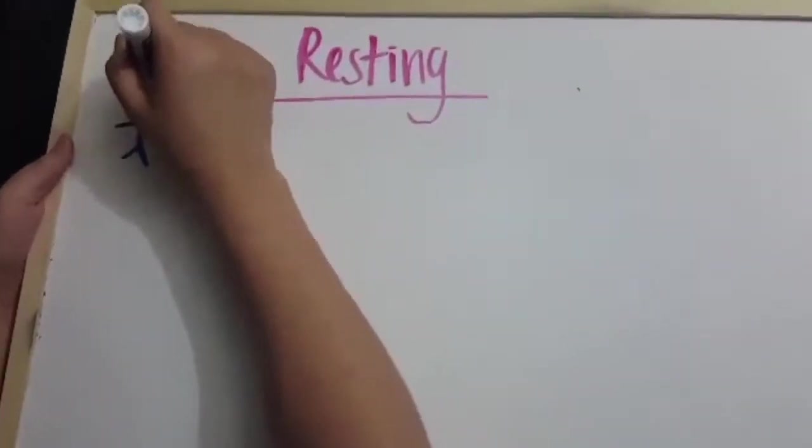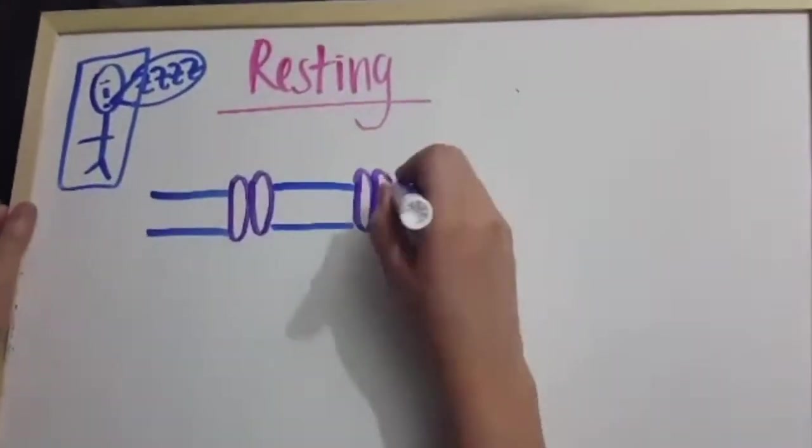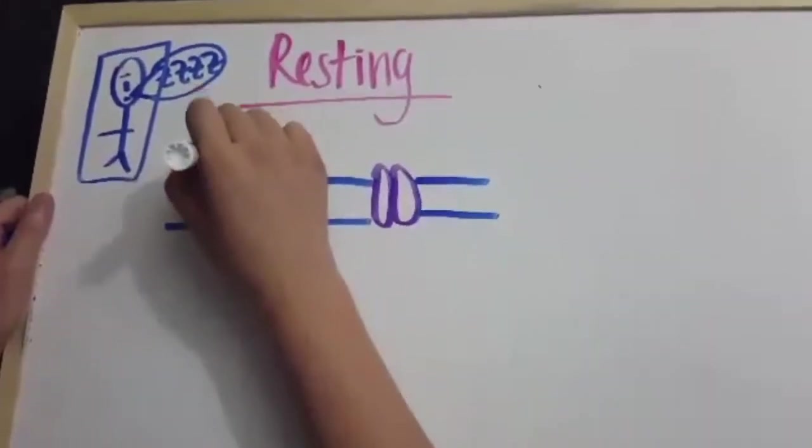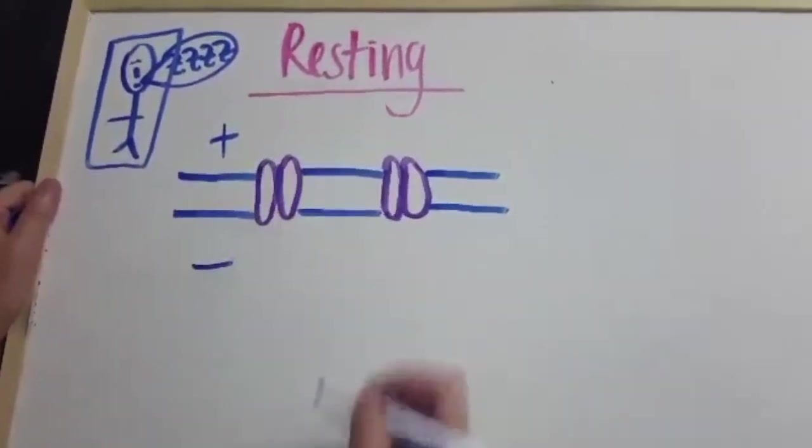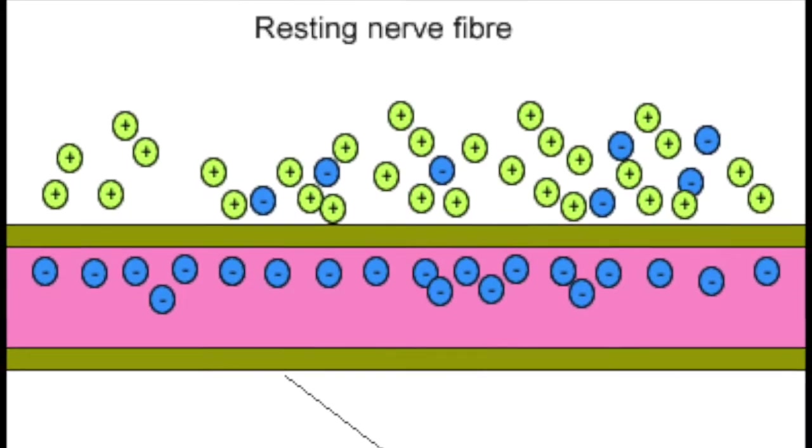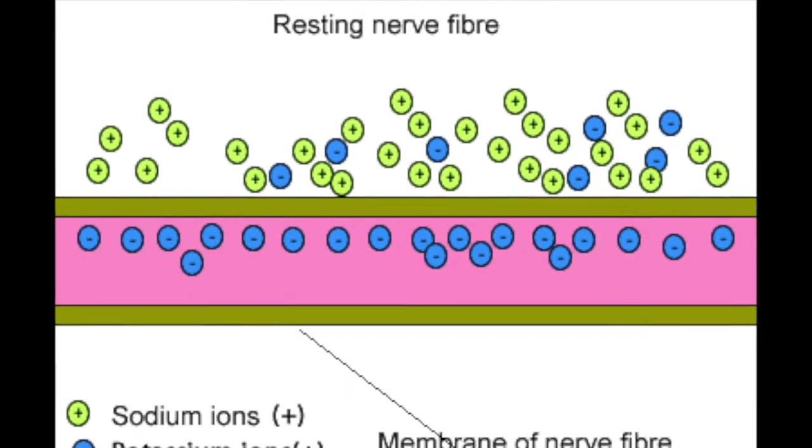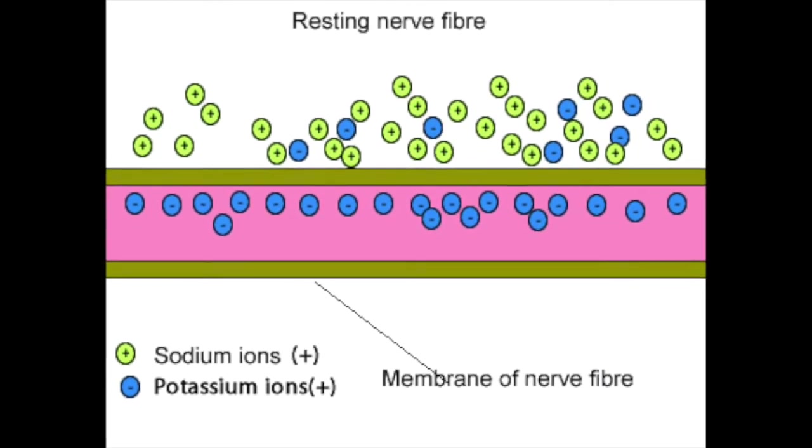During the resting stage, both potassium and sodium channels are closed. Here the membrane potential is negative 70 mV. Inside the cell are potassium ions and outside the cell are sodium ions. The number of sodium ions outside the neuron is greater than the number of potassium ions inside. This results in the outside of the cell being more positive than the inside of the cell.